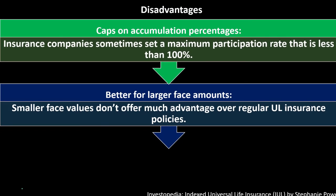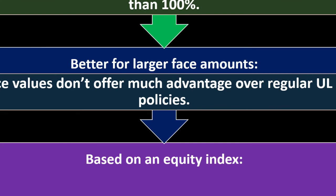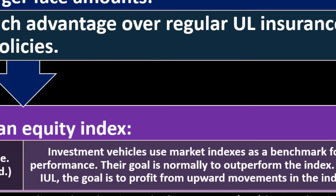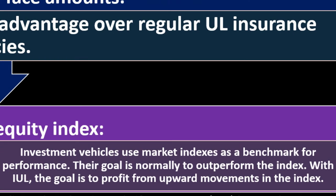Based on equity index - if the index goes down, no interest is credited to the cash value. Some policies offer a low guaranteed rate over a longer period. Investment vehicles use market indexes as a benchmark for performance. Their goal is normally to outperform the index. With IUL the goal is to profit from upward movements in the index. Is index universal life insurance IUL a good investment? I expect a yes or no answer here. An IUL can be a good way to save money in a cash value account connected to a market index. It may earn modest interest but it is first and foremost a life insurance policy, not an investment vehicle. I was expecting a yes or no. That's an it depends answer.